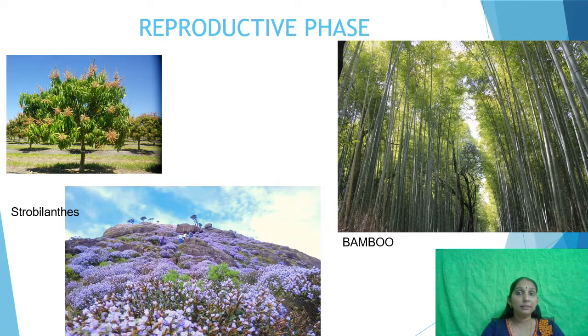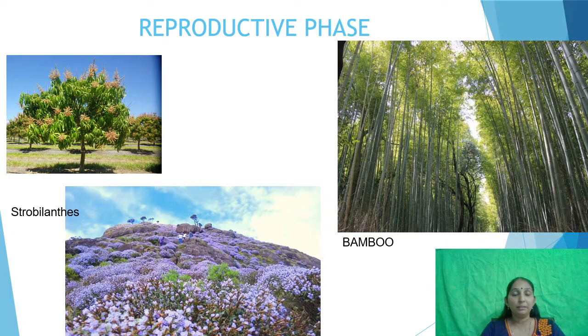Mango tree, bamboo — there are different periods for different species. The reproductive phase may differ in different plants.